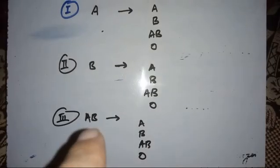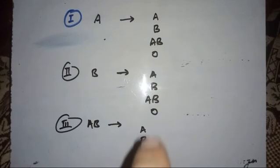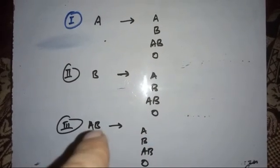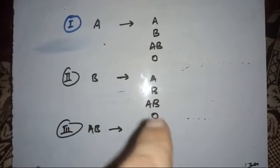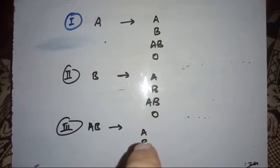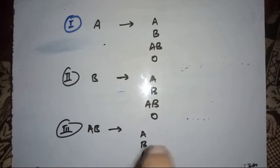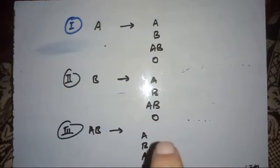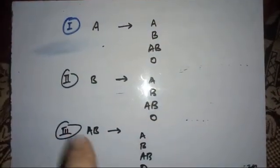Coming to the AB blood group: AB has both A antigen and B antigen but no antibodies. When transfusing AB to A, we look for antibodies in the recipient. Group A has no anti-A antibodies but does have anti-B antibodies. So the anti-B antibodies in recipient A will cross-react with the B antigen from the AB donor, causing a transfusion reaction.